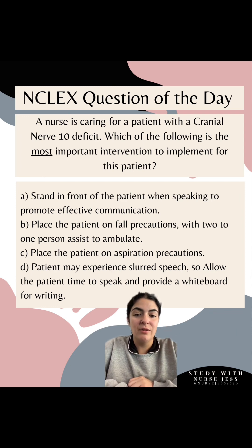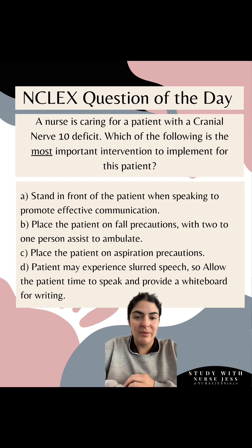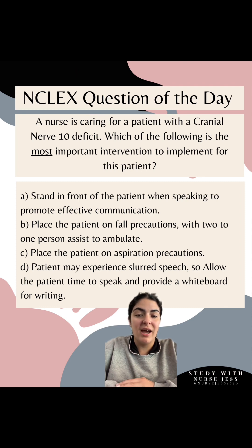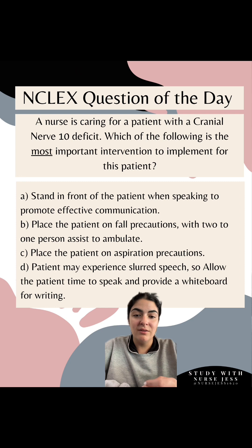Option A: stand in front of the patient when speaking to promote effective communication. If I don't do that, the worst that can happen is the patient doesn't understand me — that's not that bad. Option B: place the patient on fall precautions with two-to-one person assist to ambulate. If I don't implement that, the worst that can happen is the patient can fall. Option C: place the patient on aspiration precautions. If I don't do aspiration precautions, the patient can aspirate on food and develop aspiration pneumonia — that could be bad. So I keep options B and C open.